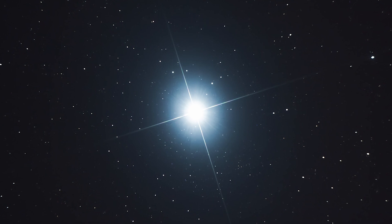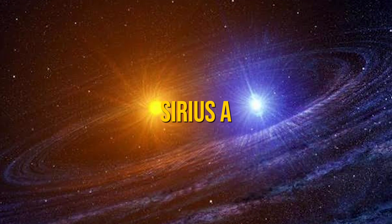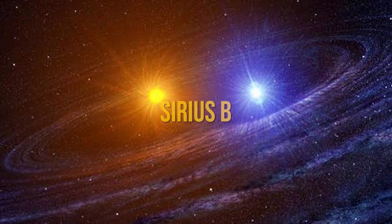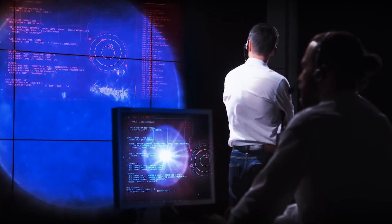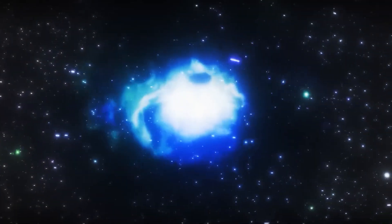Sirius is a binary star system consisting of two main stars: Sirius A, a bright main-sequence star, and its companion Sirius B, a white dwarf. Sirius A is roughly twice the mass of our sun and shines with a luminosity over 20 times greater, making it an exceptional beacon in the cosmos.